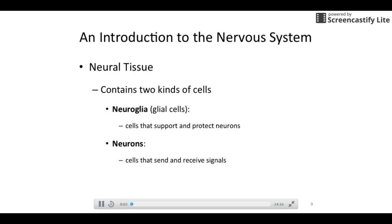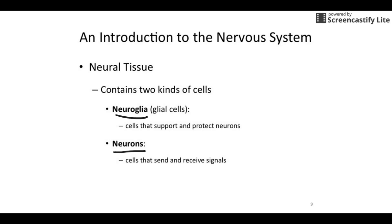This is the second of the videos that go with the nervous system physiology. This is going to cover slides 9 through 19, and the big focus is going to be on the two types of cells, which are going to be the neuroglia and the neurons.